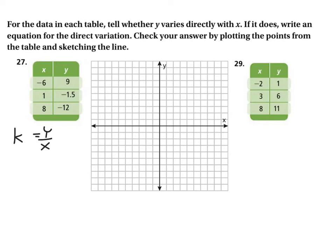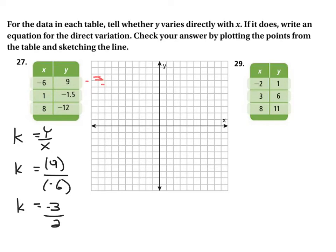First, k could be equal to the y value of 9 divided by the x value of negative 6. When you do that, you get k equals 9 divided by negative 6, and dividing top and bottom by 3 gives us 3 over negative 2, or negative 3 halves. This first one results in negative 3 halves.